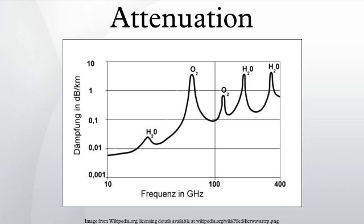The propagation of light through the core of an optical fiber is based on total internal reflection of the light wave. Rough and irregular surfaces, even at the molecular level of the glass, can cause light rays to be reflected in many random directions. This type of reflection is referred to as diffuse reflection, and it is typically characterized by a wide variety of reflection angles. Most objects that can be seen with the naked eye are visible due to diffuse reflection. Another term commonly used for this type of reflection is light scattering. Light scattering from the surfaces of objects is our primary mechanism of physical observation.